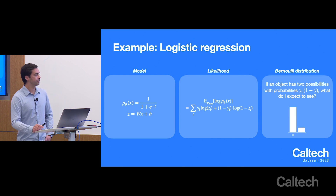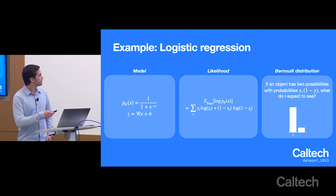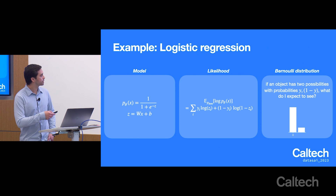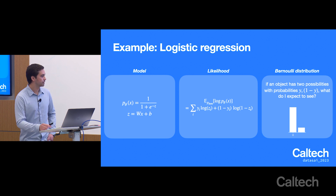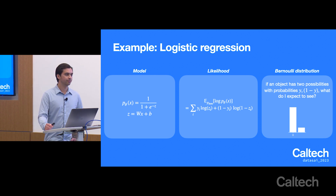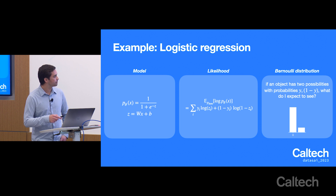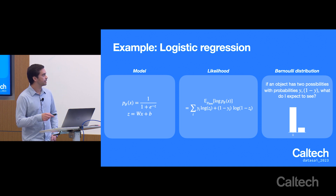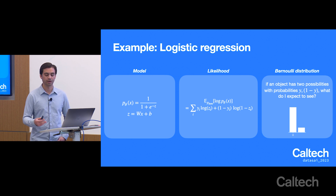One example of how this method is employed is in logistic regression, which we reviewed yesterday. In logistic regression, we have a logistic distribution with a sigmoid characteristic, and we assume that variables depend on each other through linear relationships. The likelihood function is modeled using this equation, given by a distribution that models two possibilities with probabilities y and 1 minus y.